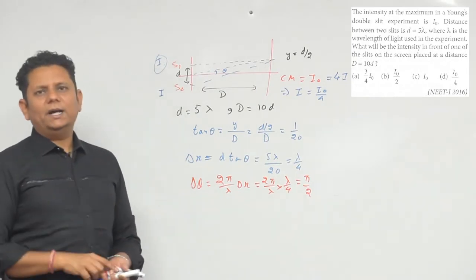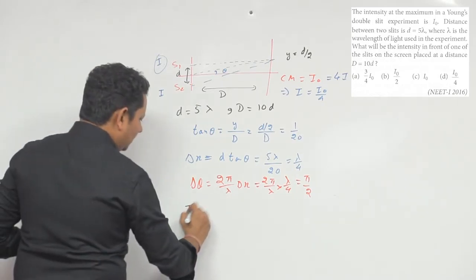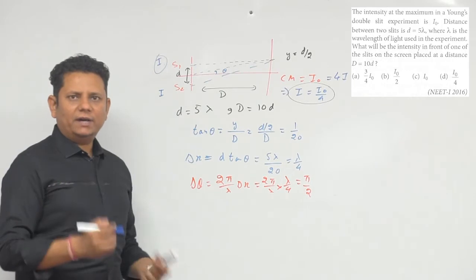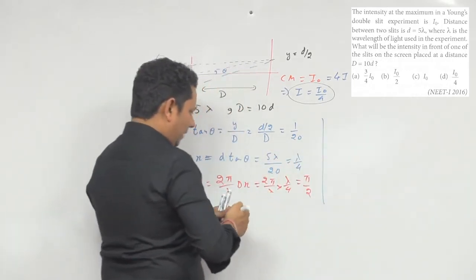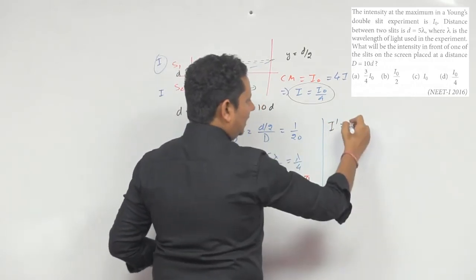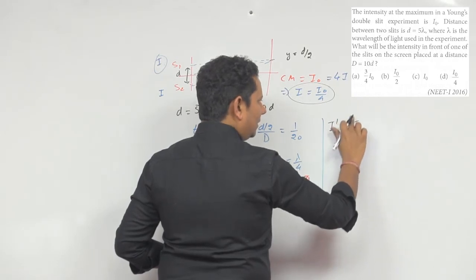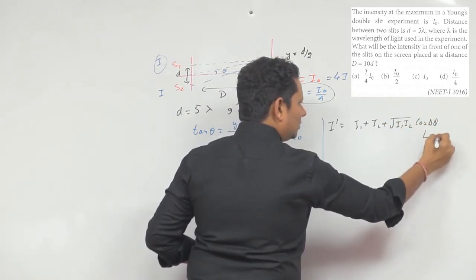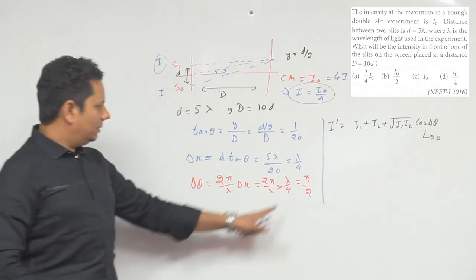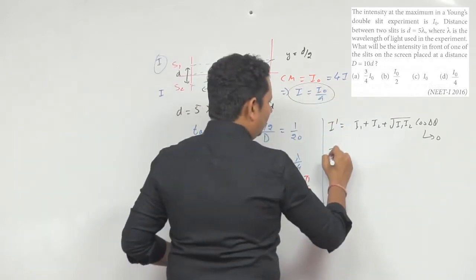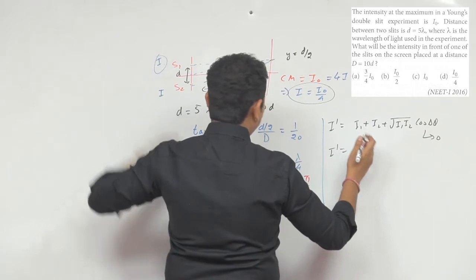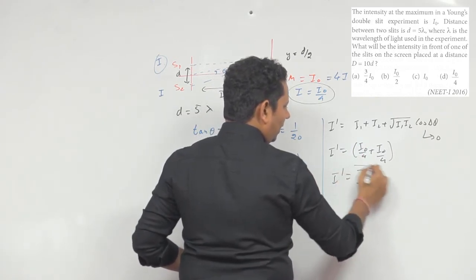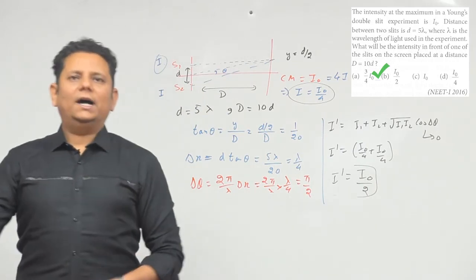उस location पर intensity I' होएगी। किसी भी location पर intensity का formula है: I' = I1 + I2 + 2√(I1·I2) × cos(delta φ)। cos(π/2) = 0 हो जाएगा, तो I' = I1 + I2। I1 और I2 दोनों equal हैं और I0/4 हैं, तो I' = I0/4 + I0/4 = I0/2। So the answer is option B: I0/2.